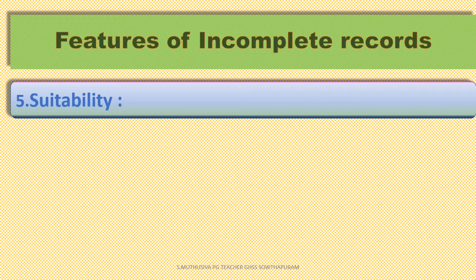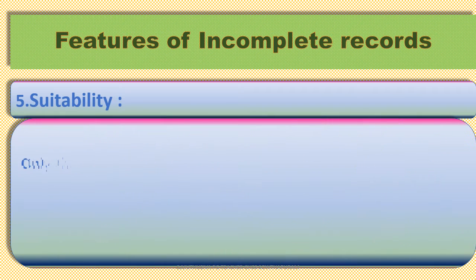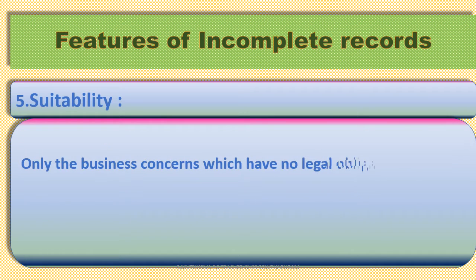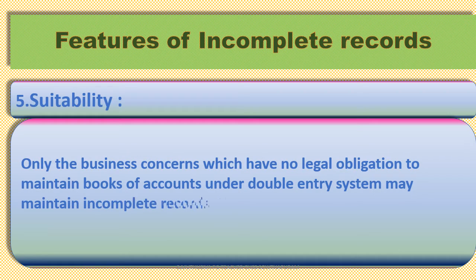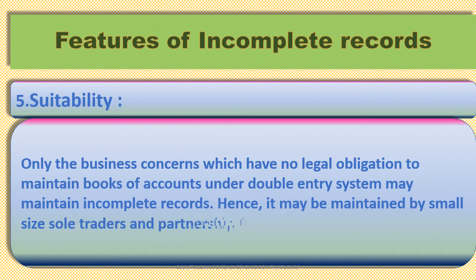Fifth feature — Suitability. Only business concerns which have no legal obligations to maintain books of accounts under the double entry system may maintain incomplete records. Hence, it may be maintained by small-size sole traders and partnership firms.